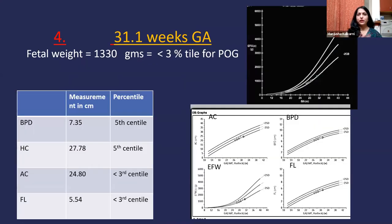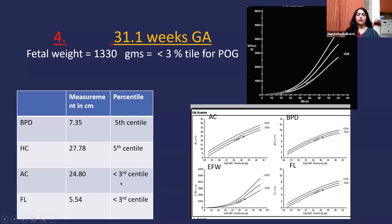We called the patient after one week again. However, the patient decided that since she kept getting the same type of report, she would come after a period of 12-13 days, and she came at 31.1 weeks of gestation. There was further deterioration in growth parameters, with fetal weight less than the 3rd centile for gestational age.